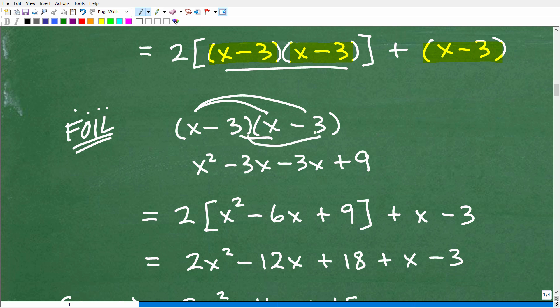If you don't understand this, I have tons of videos on all this stuff in my algebra playlist on how to multiply binomials. But basically what you're going to have is x times x, that's x squared, x times negative 3, negative 3x, negative 3 times x, negative 3x, negative 3 times negative 3, positive 9. So here x minus 3 times x minus 3 ends up being x squared minus 6x plus 9.